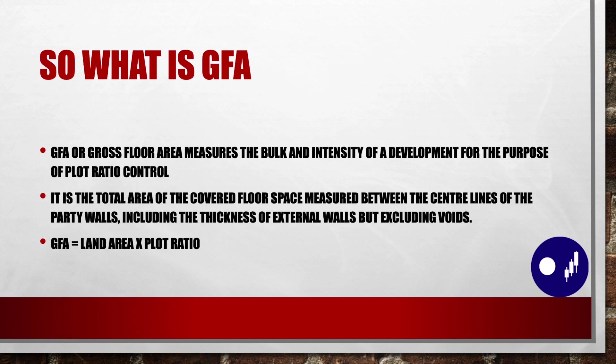So what exactly is GFA or gross floor area? It measures the bulk and intensity of a development for the purpose of plot ratio control. It is the total area of the covered floor space measured between the centre lines of the party walls, including the thickness of the external walls, but excluding voids. The calculation for it would be: GFA equals land area times the plot ratio.